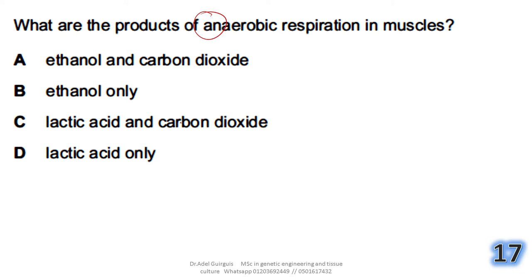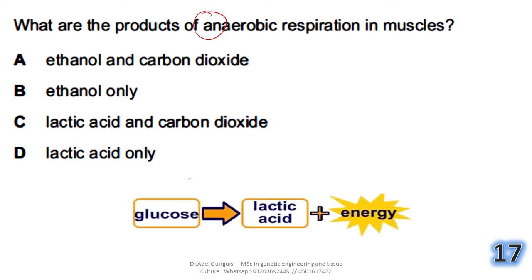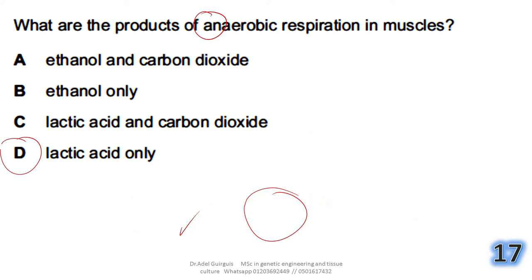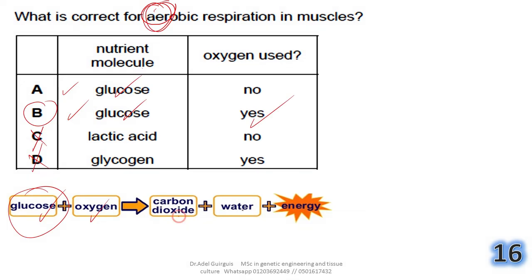Question 17: what are the products of anaerobic respiration in muscles? Anaerobic means no oxygen is involved. Glucose is broken down into lactic acid without using oxygen. The product is lactic acid only — plus energy. No carbon dioxide or water is produced, unlike aerobic respiration.